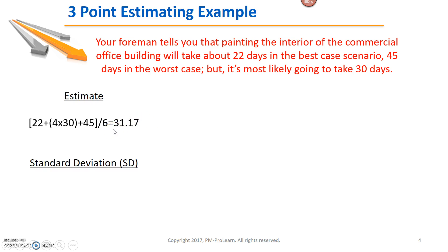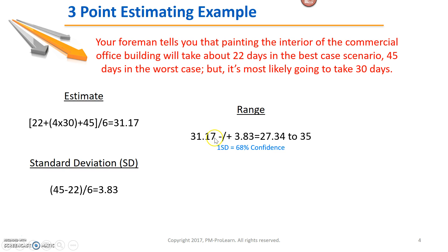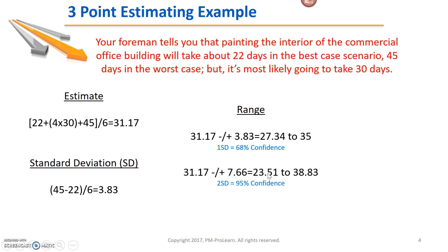Step two is to determine the standard deviation: pessimistic minus optimistic, so 45 minus 22, divided by six — that gives a standard deviation of 3.83. Now to come up with a range, I take my weighted average of 31.17, subtract and add one standard deviation of 3.83, and get a range of 27.34 to 35 days. That one standard deviation gives a 68% confidence level. But if I want greater confidence, I subtract and add two standard deviations: 3.83 times two equals 7.66, and adding and subtracting that from 31.17 gives a bigger range. A bigger target gives greater confidence that I can hit it.